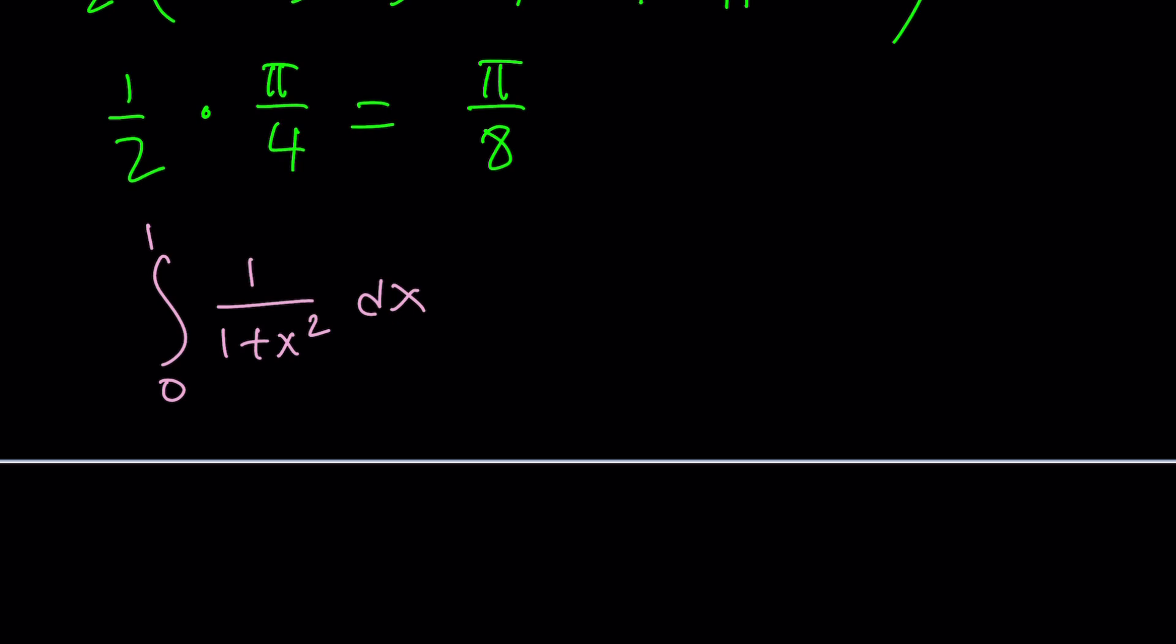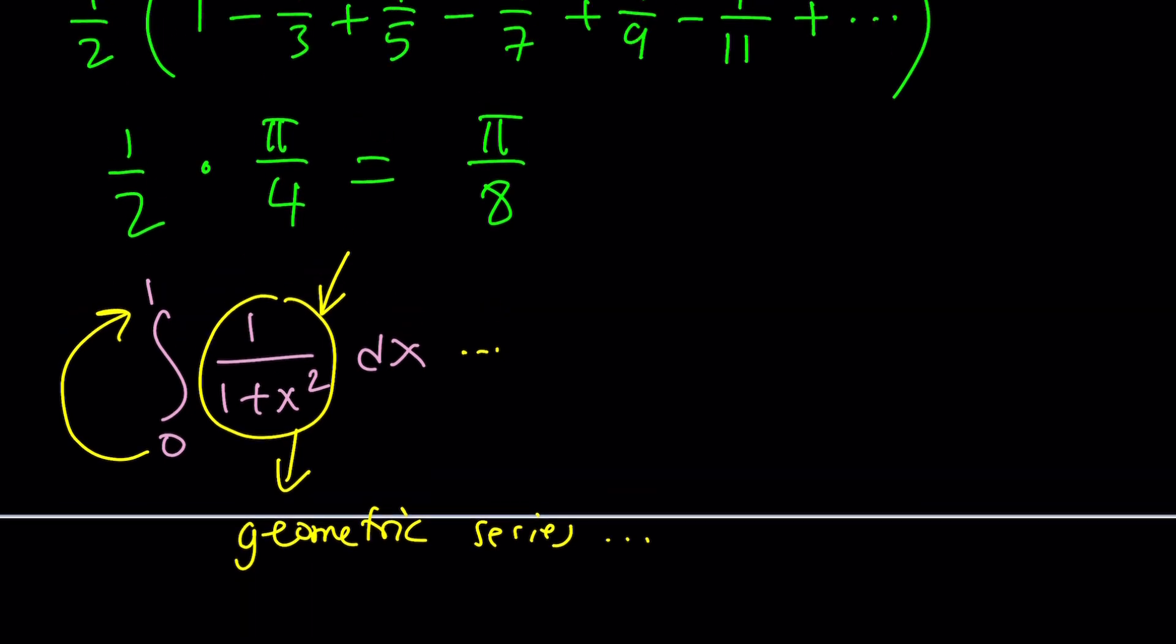You can check the integral of 1 over 1 plus x squared dx from zero to one, a definite integral, in which you treat this as the sum of a geometric series. If you use the formula for the sum of geometric series—and notice that x would be between zero and one so that should converge in the infinite case—and if you take a look at that, you're going to realize that the terms will alternate. If you integrate term by term or just integrate directly, you hopefully know how to integrate this and then you'll get what I'm talking about.